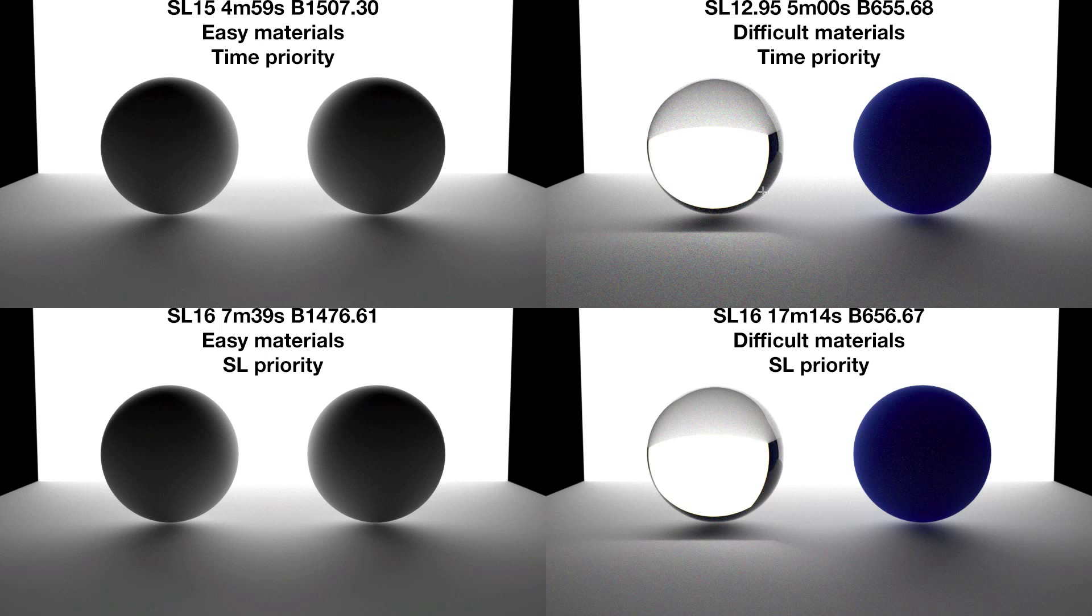But on the right the spheres have been assigned more difficult materials. The transparent sphere is acrylic from an IOR file and the blue sphere is a rubber SSS material, subsurface scattering material.